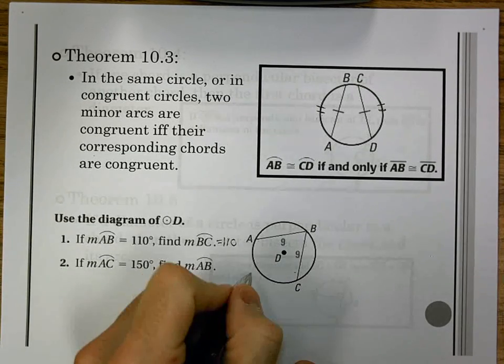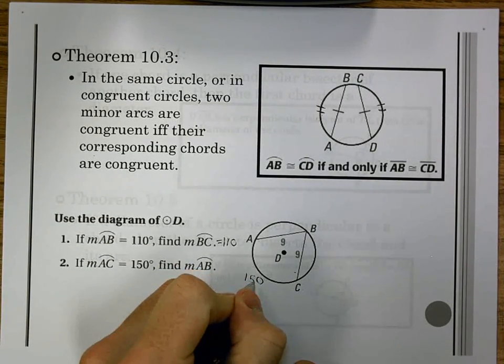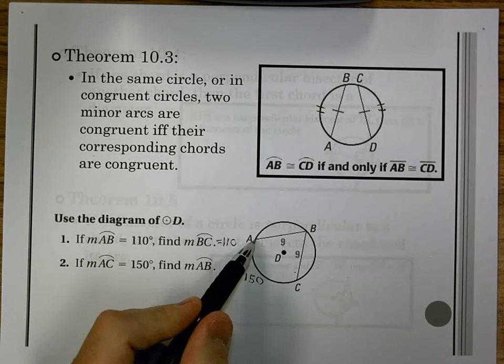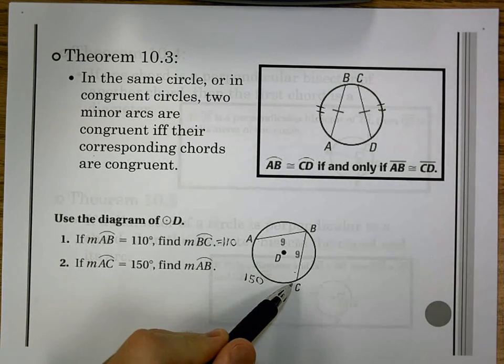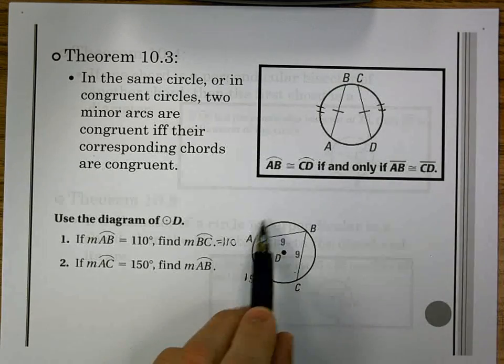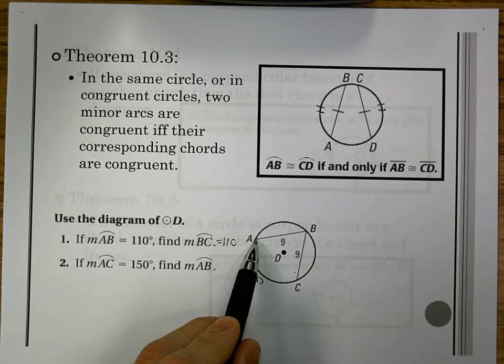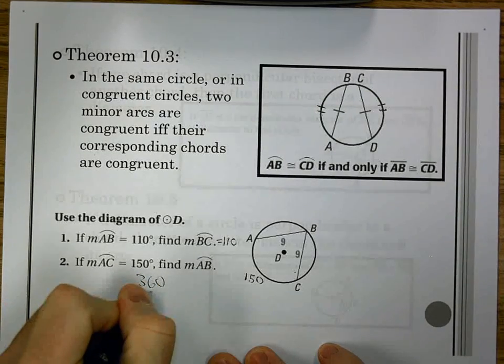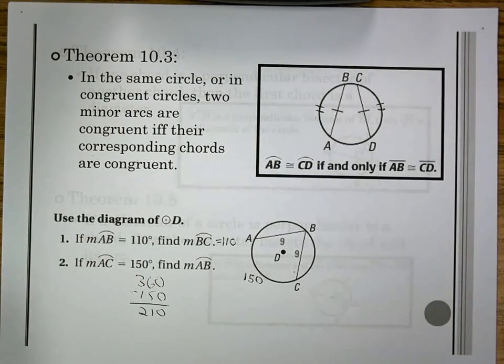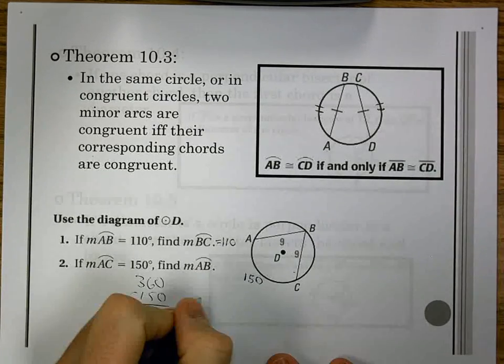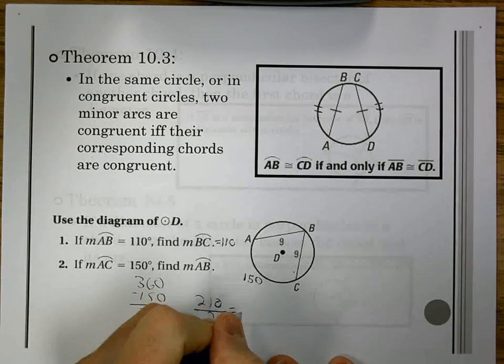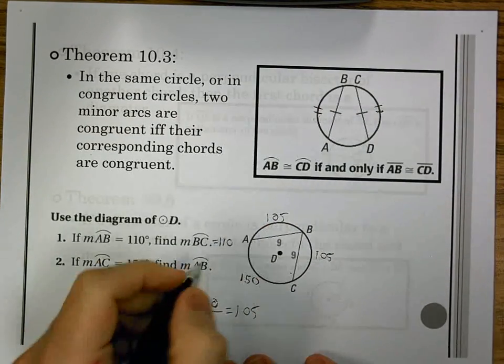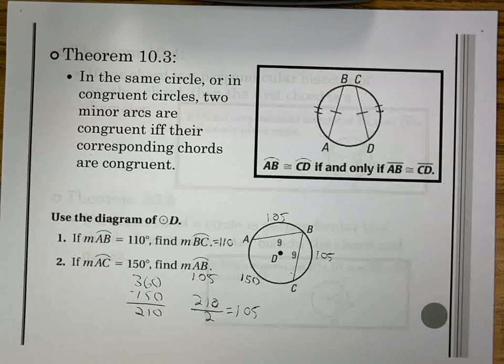From the second one, here we have AC is 150. Now if AC is 150, we have to find AB. We don't have a chord going here, so I'm not going to use that congruent to something. But I do know that since this is 150, the rest of the circle would have to be 360 minus 150, which would be 210. But these are equal, so I divide it by 2, and I get that each of the remaining arcs are 105. So that means AB is 105.